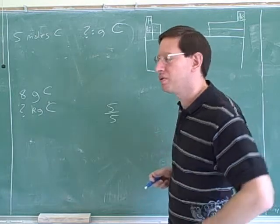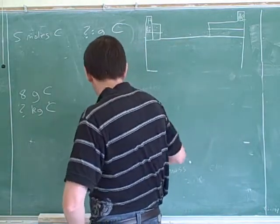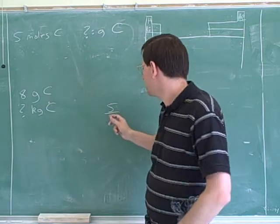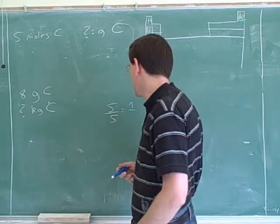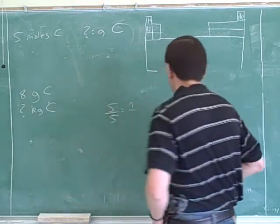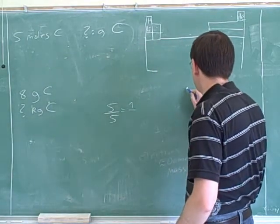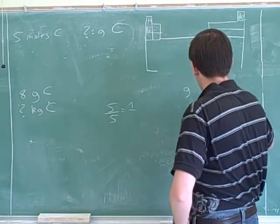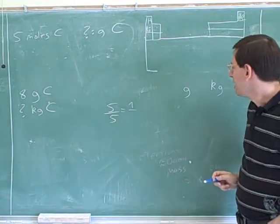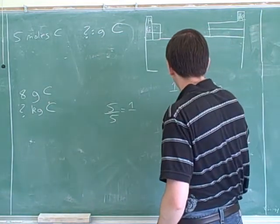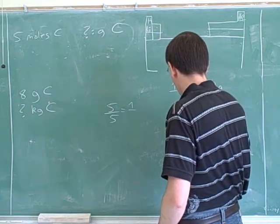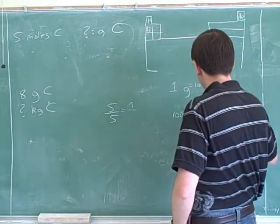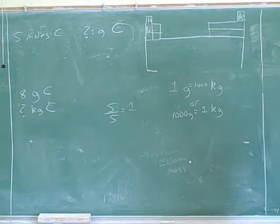So notice that if you have the same thing on the top and the bottom of a fraction, that's just 1. Now, let's write down an equivalency between grams and kilograms. Which of these is true? Which of these is the correct equation?